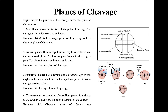Here you can see the first and second meridional cleavage planes in the frog's egg. The second type is the vertical plane: when the cleavage furrow lies on either side of the meridional plane, the furrow passes from the animal to the vegetal pole. The cleaved planes may be unequal in size. An example is the third cleavage plane of the chick's egg.